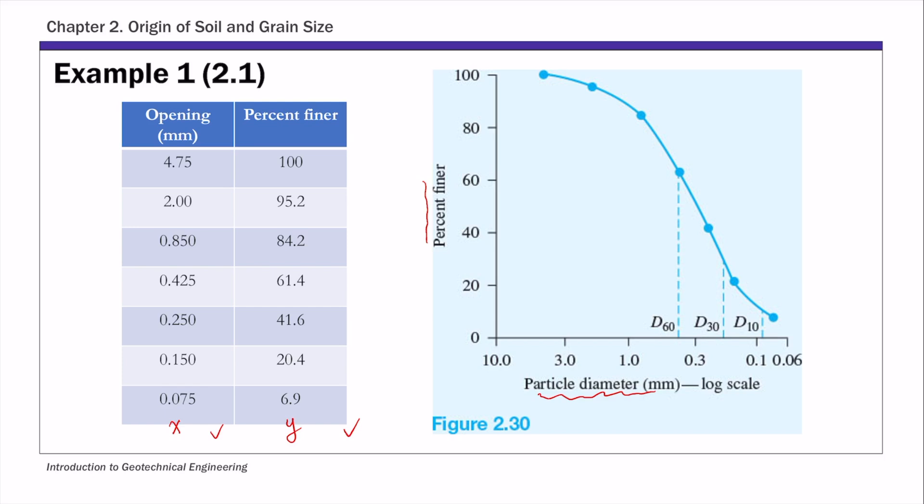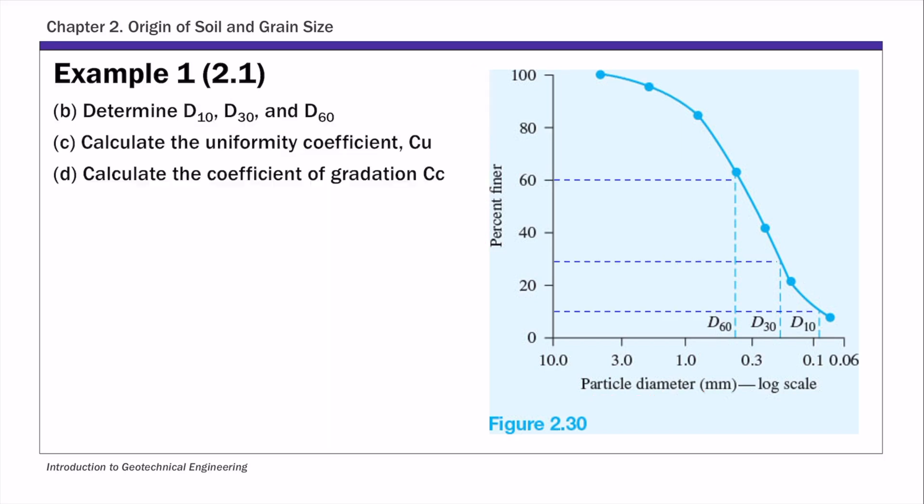Given this particle size distribution curve, in this example, you are asked to determine d10, d30, d60, and then to calculate two coefficients. So let's start with d10, d30, and d60.